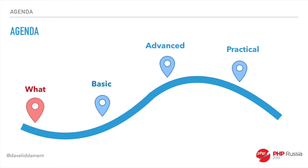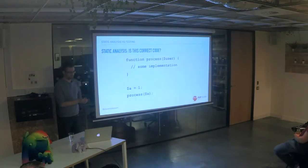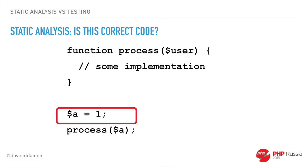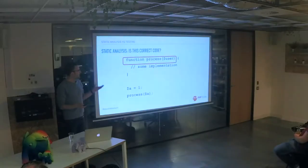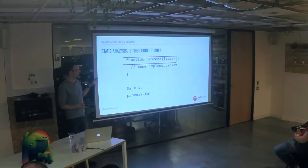Static analysis is looking at the code and reasoning about it to find potential problems. We can do some static analysis now. We're assigning integer value 1 to $a, calling the function process, passing in $a — so passing value 1 — and passing it to users. We'd have to delve into the process function to determine if an integer is the correct thing to pass. Looking at this code here, we can't say for sure that there's anything wrong with it.